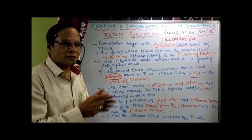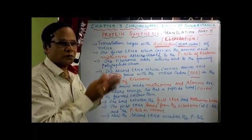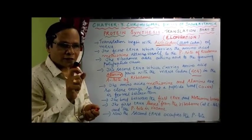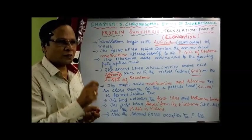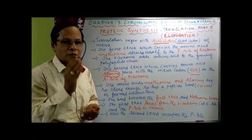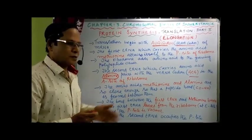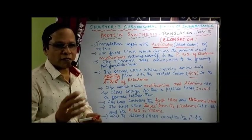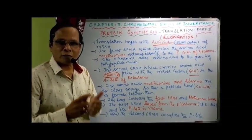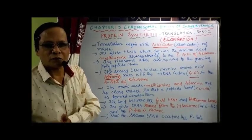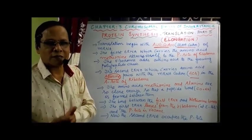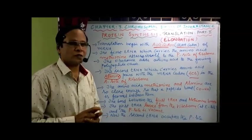Methionine and alanine are found attached, and a bond is formed between them. They form a peptide bond. The second tRNA is still attached to the A-site, and the bond is formed between methionine and alanine at the A-site. So now methionine is present in the P-site and alanine is present in the A-site. A peptide bond is formed between the carboxyl group of methionine and the amino group of alanine — this bond is called the CONH bond or peptide linkage.